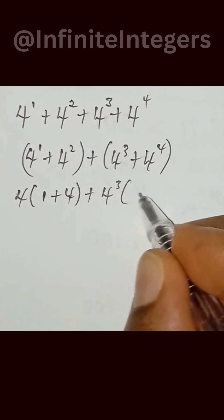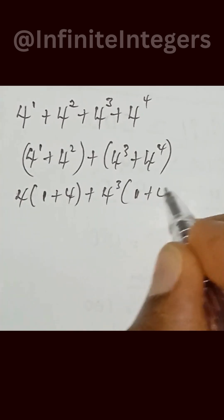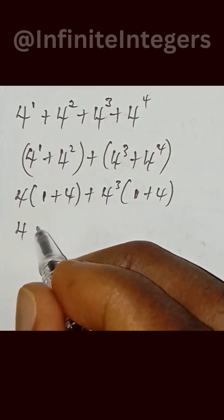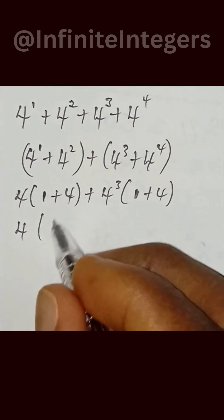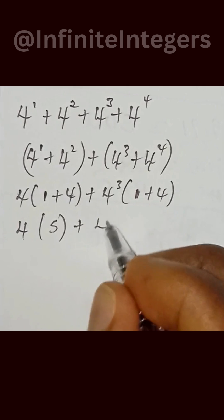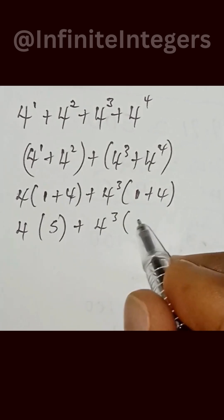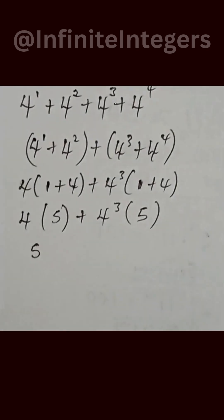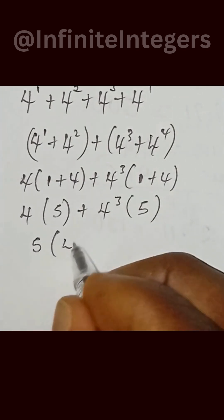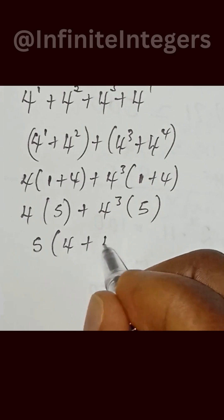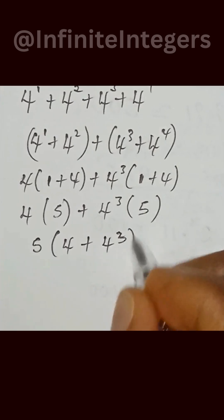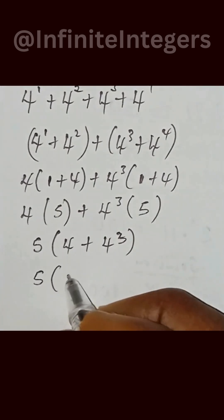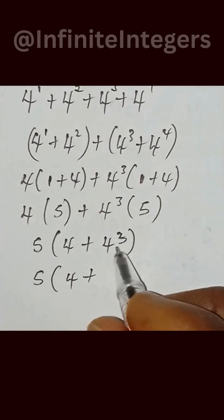Over here we can factor out 4 to the power of 3, giving us 4 to the power of 3 times 1 plus 4. Adding those together, we have 4 times 5 plus 4 to the power of 3 times 5. Since 5 is common, let's bring out the 5, giving us 5 times bracket 4 plus 4 to the power of 3.